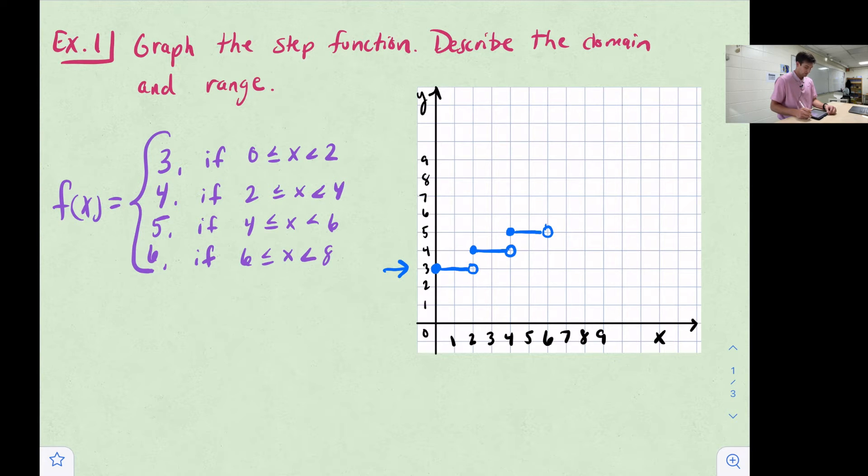The last piece, y is equal to six, or f of x equals six. We have six here with a closed circle. We would have our open circle on eight, x is eight. Now we draw our line to connect those. We have graphed our step function.